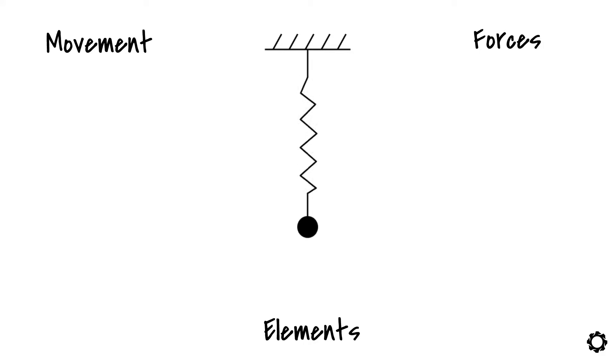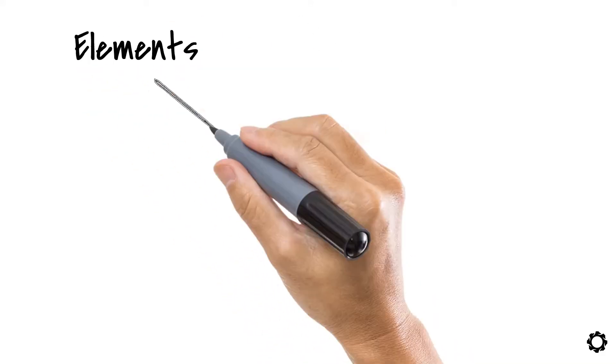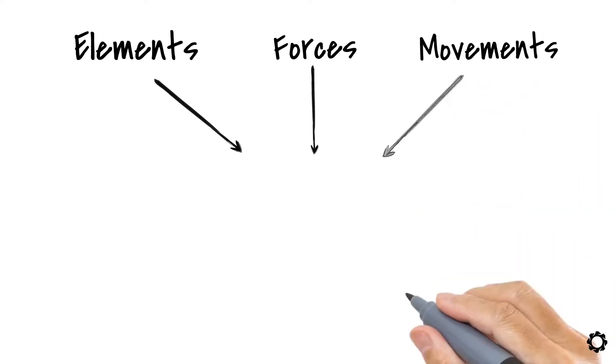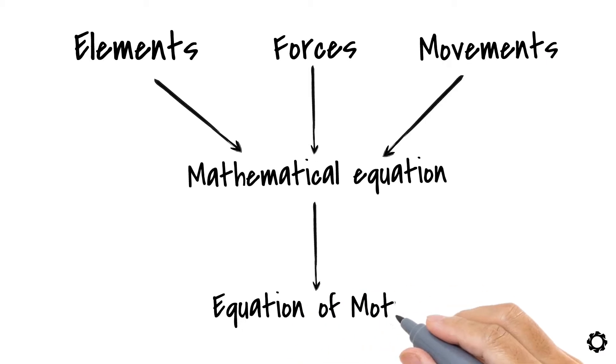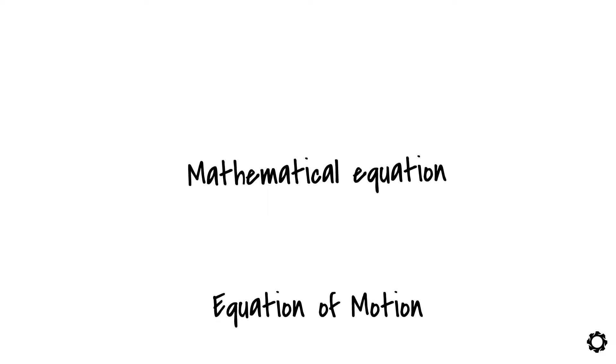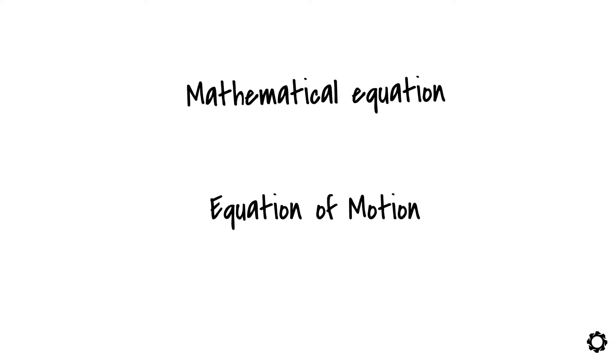Now, you get the idea that if we find the correct combination of these terms, elements, forces and movements, and we write them in a mathematical equation, we are likely to get the equation of motion of the system. But don't worry, you don't have to figure out how to combine these terms on paper and break your head. Many people have done it already and we will show you how.